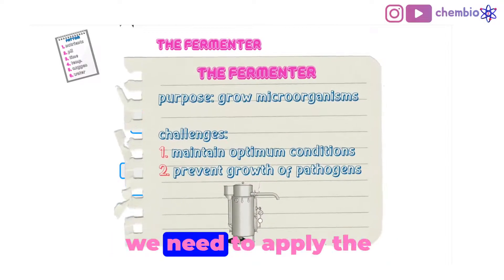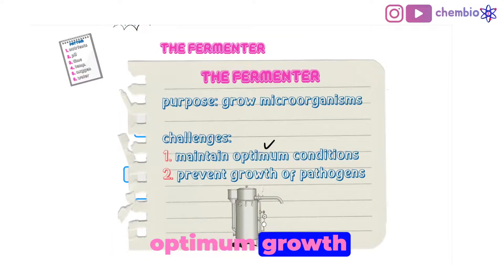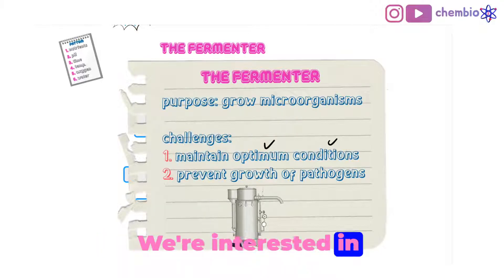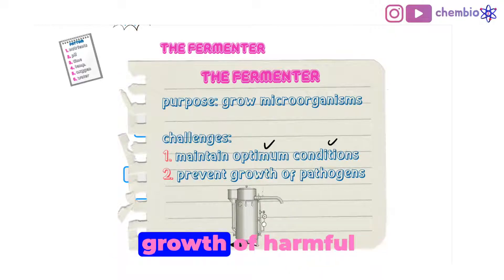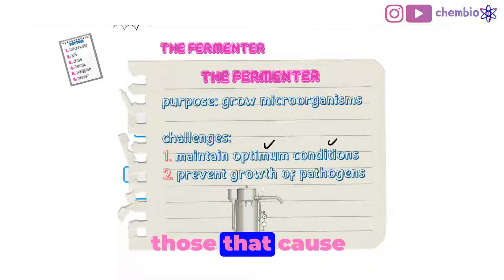Basically, we need to apply the optimum growth conditions for the microorganisms to grow. We're interested in growing useful microorganisms, like the penicillium I was telling you about. But at the same time, we want to prevent the growth of harmful microorganisms, like pathogens, those that cause disease.